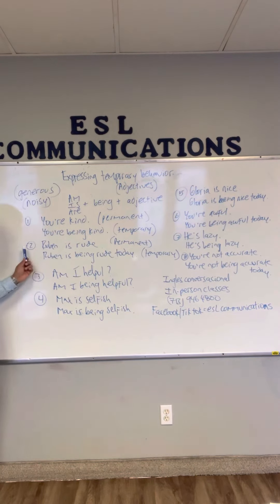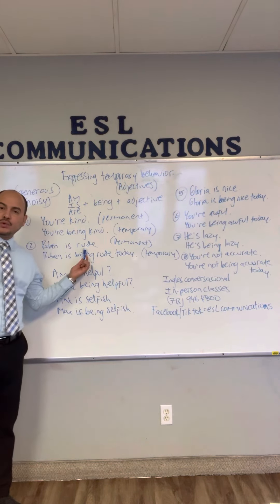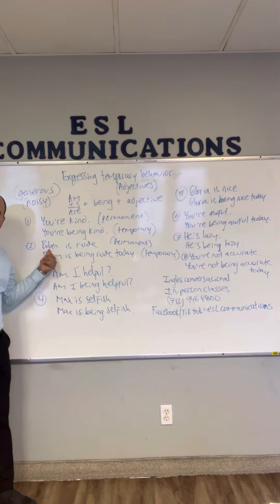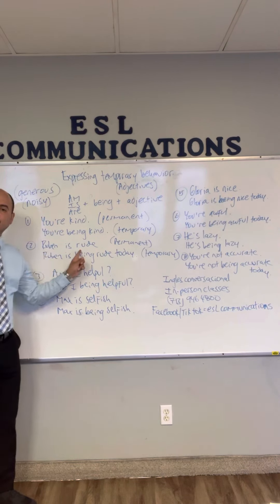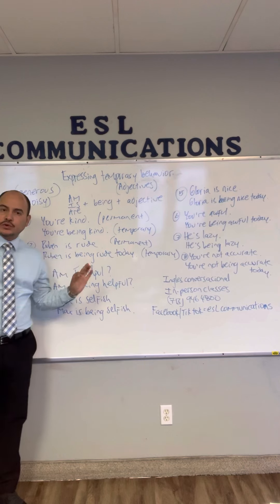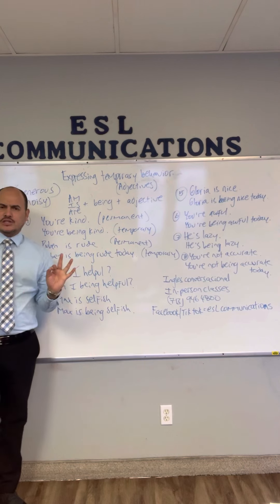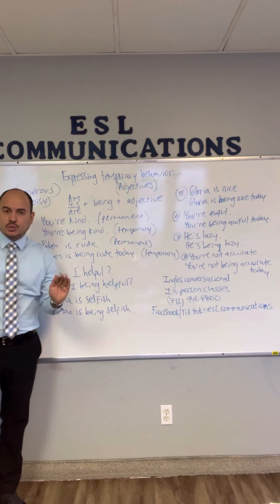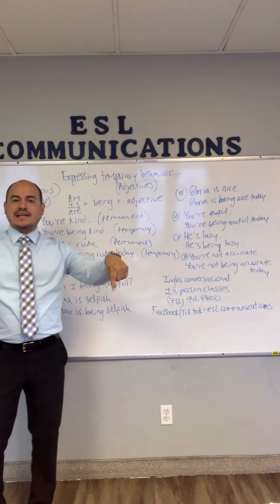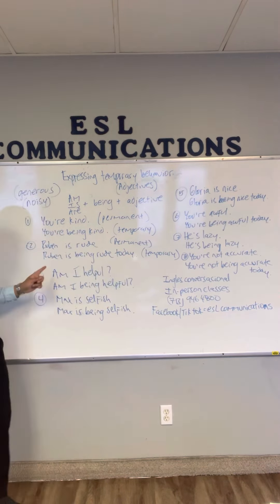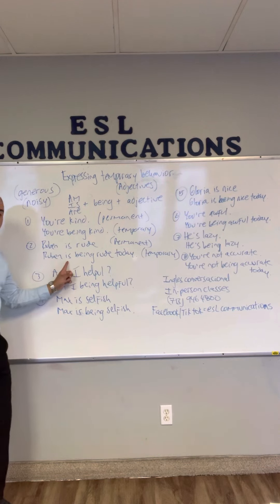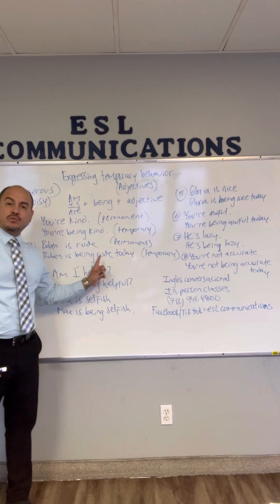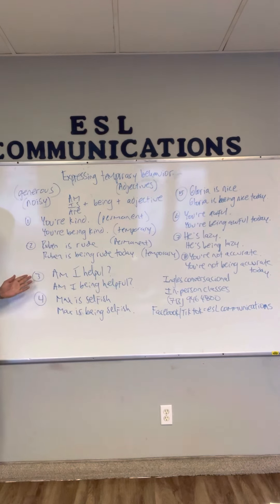Number two: 'rude.' Rude es alguien grosero. Permanent: 'Ruben is rude' — Ruben es grosero, es así permanentemente. But if he's only acting that way today: 'Ruben is being rude today.'